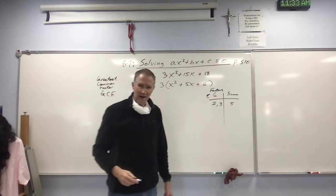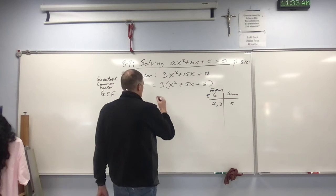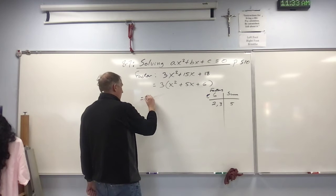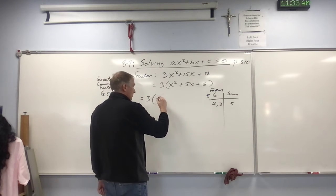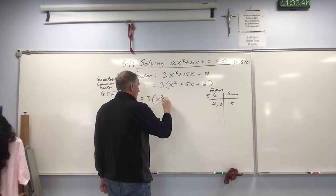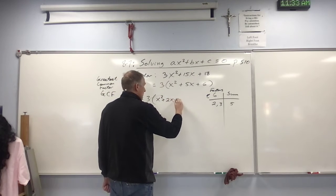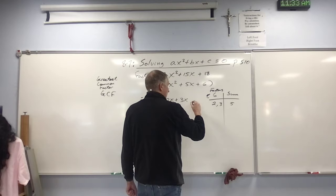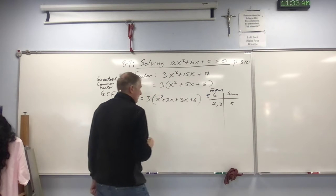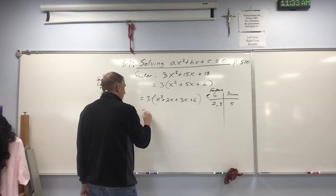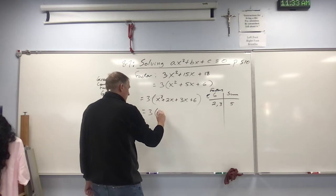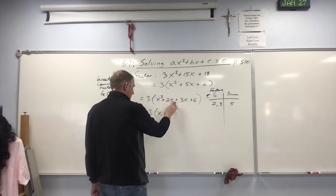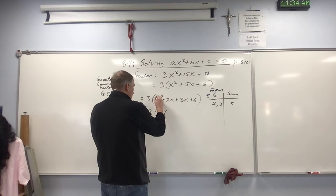So now I can write this as three times parentheses - this is going to be x squared plus 2x plus 3x plus 6. These have an x in common, so here's x out to the side. Take an x out, factor out the x. I'm going to group these things like this.